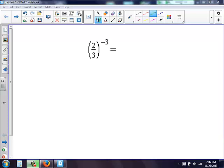Okay, we have the fraction 2 thirds, and it's all raised to the negative third power. We know when we have parentheses like this, we need to take this negative 3 exponent and distribute it to everything in the fraction here, inside the parentheses.